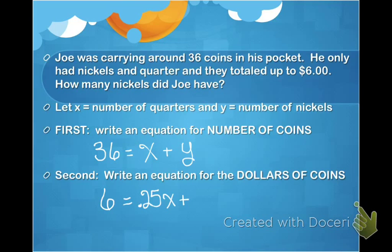And if I add that to the dollars of nickels he has, and I'm going to do that by 0.05 is how we represent nickels. Be careful and don't put 0.5 times the number of nickels he has. If I add those two dollar amounts together, I have to get six dollars. So now we have a system of equations that we can solve.